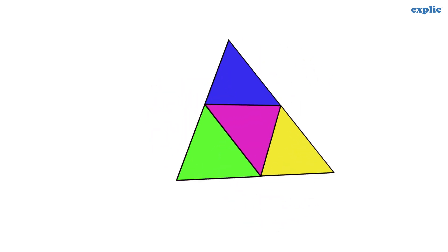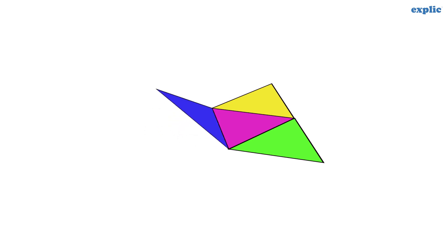A pyramid is a polyhedron whose base is a polygon and lateral faces are triangles with a common vertex. For example, triangular pyramid and square pyramid.